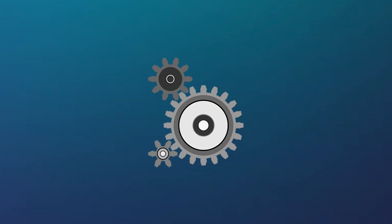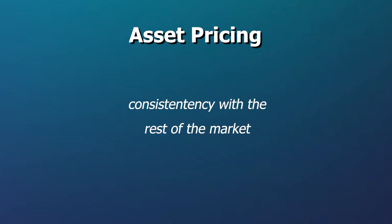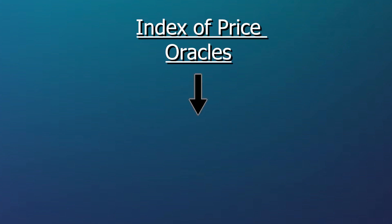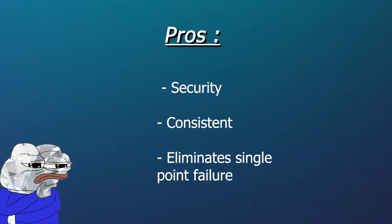Another important mechanic to talk about is their asset pricing. In order for prices to stay consistent with the rest of the market, GMX uses an index of price oracles for each asset to determine asset prices for their own protocol. This ensures that assets have a secure, consistent pricing mechanism and aren't exposed to too much risk in case one of these oracles fails.